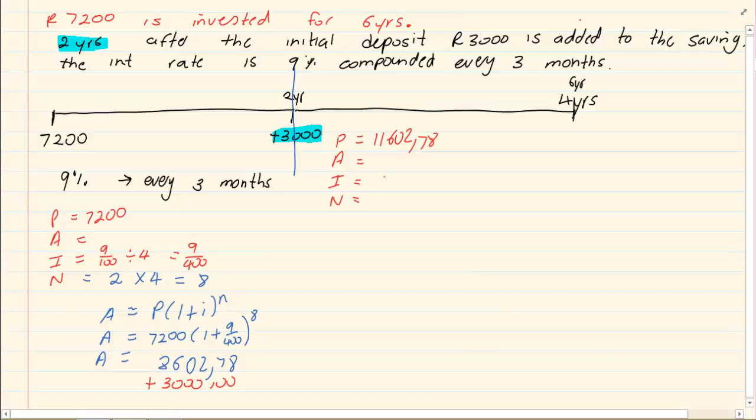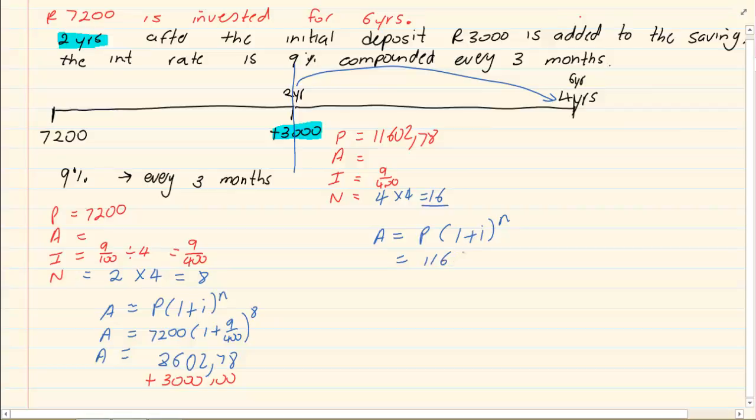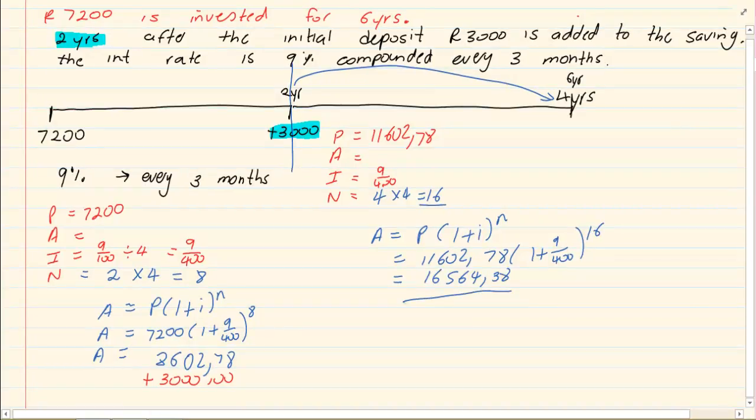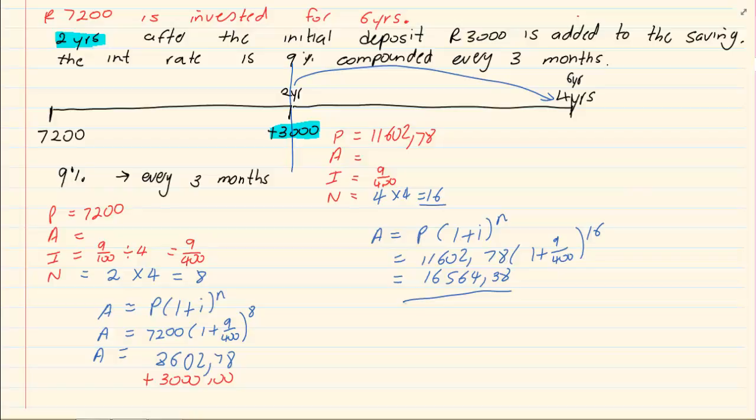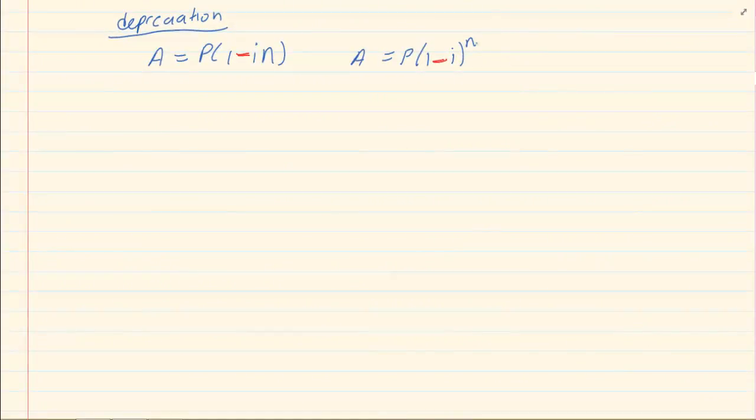Now our interest has still stayed the same. So it is still 9 over 400. But the amount of years from 2 years to the 6 years is only 4 years. So we are going to say 4 times 4, which gives us an N of 16. Then we go to our formula. We substitute our values. And you put it in your calculator. So the total value of the investment after 6 years is 16,564.38. Let's go to the next section.